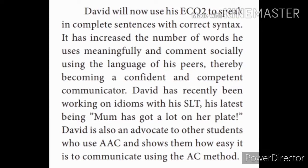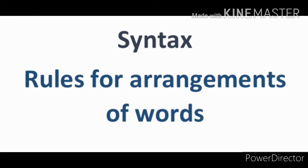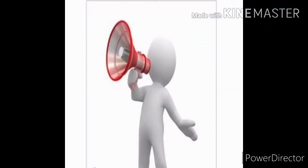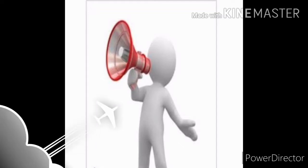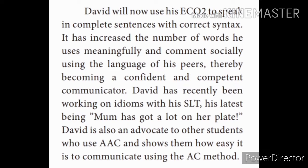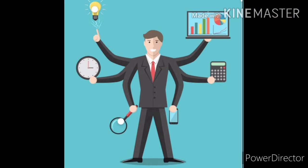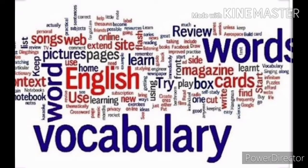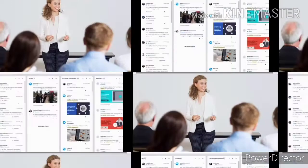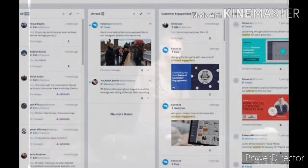David will now use his Eco2 to speak in complete sentences with correct syntax. Syntax means the way that words and phrases are put together to form sentences — that is, rules for arrangement of words. David can speak fluently in complete sentences using this Eco2. It has increased the number of words he uses meaningfully and comments socially using the language of his peers, thereby becoming a confident and competent communicator. Peers means same-aged people. Competent means having enough skill or knowledge.